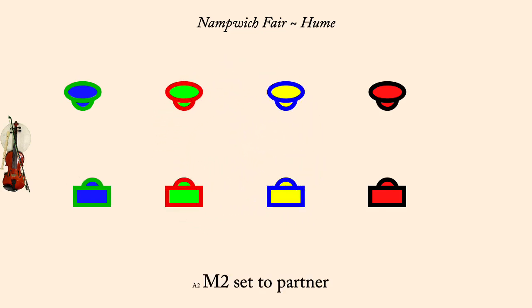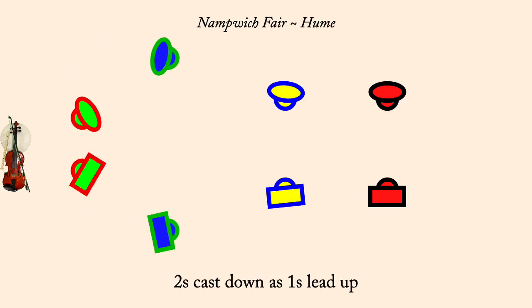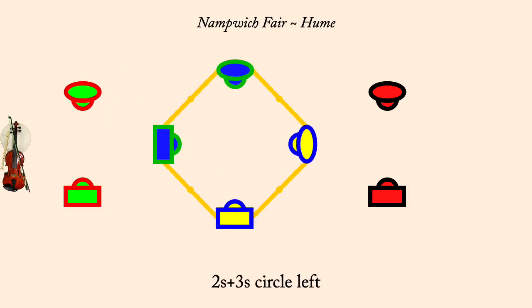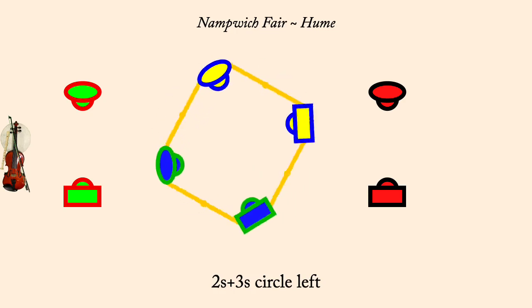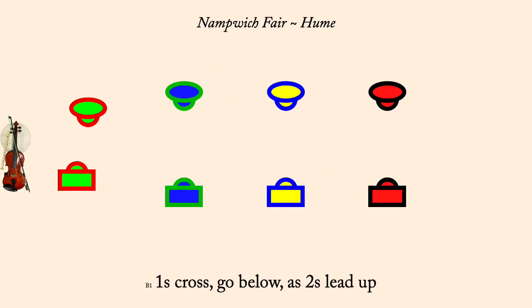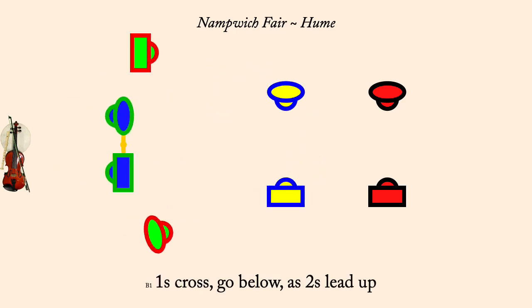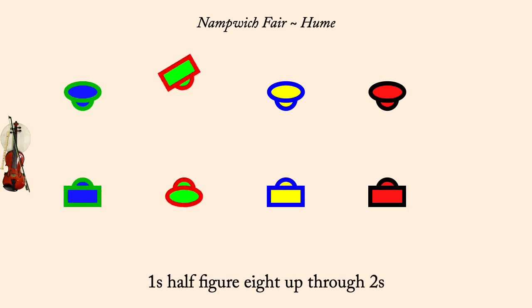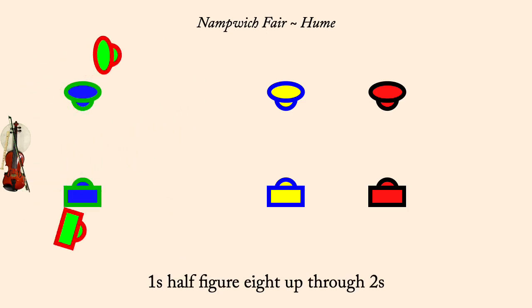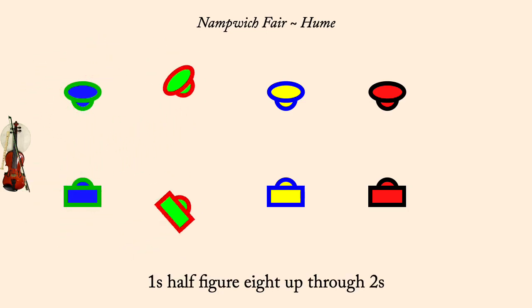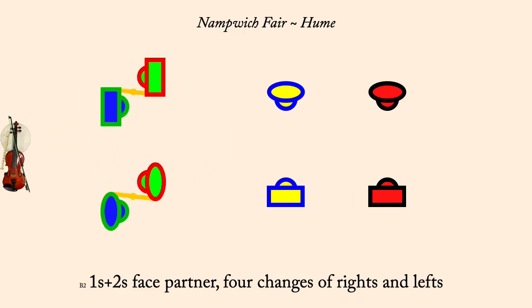Ones cast down as ones lead up. Ones and threes circle left. Ones cross, go below, as twos lead up. Ones half figure eight up through twos. Ones and twos four changes of rights and lefts.